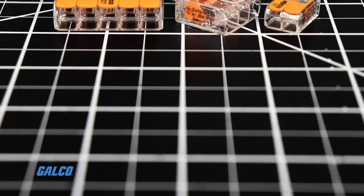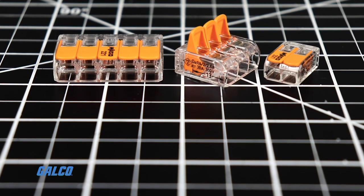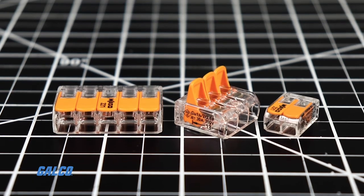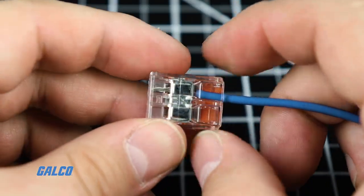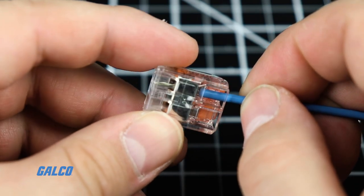All connectors in the series are rated for 450 volts and up to 32 amps on the 2-2-1-4 models. 2-2-1-6 Models are rated for 41 amps.